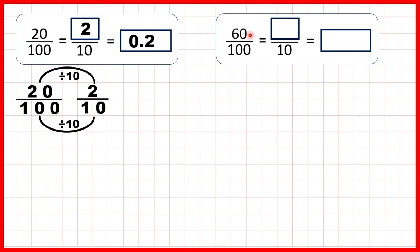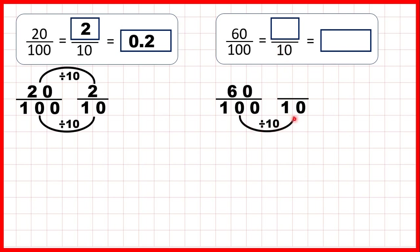Now we have 60 hundredths. First let's find an equivalent fraction with a denominator of 10. 100 divided by 10 is 10, and what we do to the denominator we do to the numerator as well, and 60 divided by 10 is 6. So 60 hundredths is equivalent to 6 tenths.